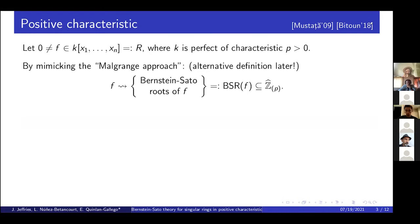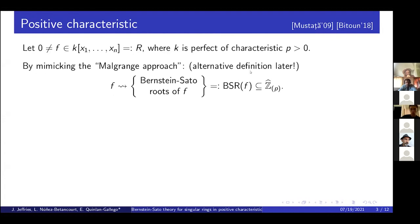Let me now move on to positive characteristic. This first modification was developed by Mustata and Bitun in two different papers. We take a non-zero polynomial with coefficients in a perfect field of characteristic p. In characteristic zero, the Bernstein-Sato polynomial is defined via a functional equation, and there's really no good analog of this in positive characteristic. But Malgrange has an alternative characterization of the Bernstein-Sato polynomial that is well suited to mimicking in characteristic p. What we attach to this polynomial f are a collection of p-adic integers that I like to call the Bernstein-Sato roots of f, even though Mustata and Bitun have different terminology for these objects.